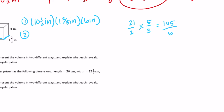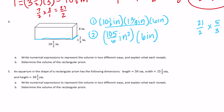So the second expression would be 105 sixths inches squared times six inches, which gives us the volume. Each expression reveals a different strategy: length times width times height equals volume, or area of the base times height equals volume. Those are the two strategies we could take.